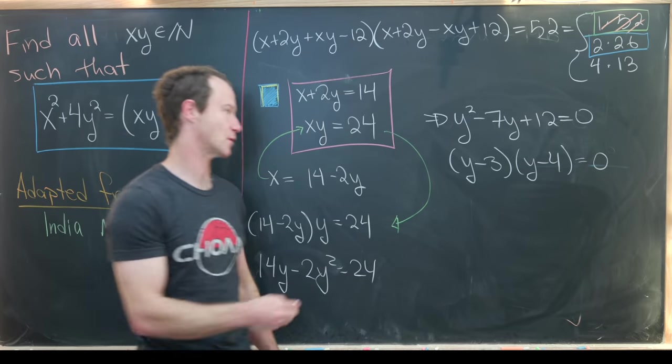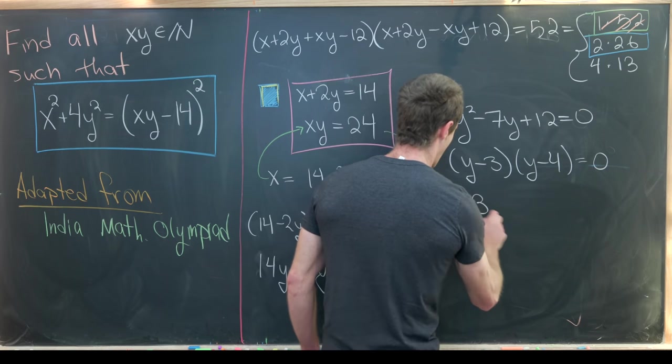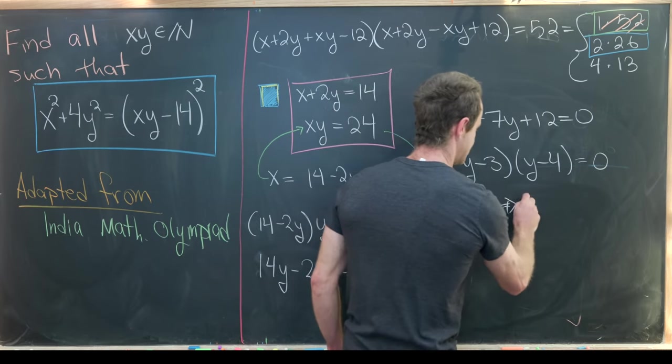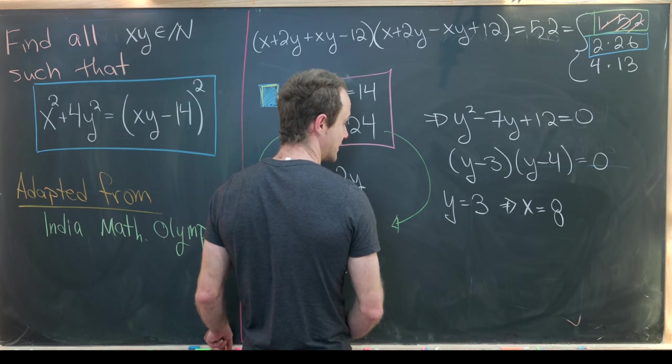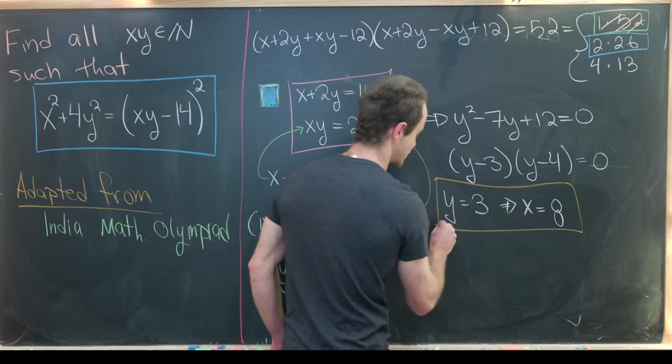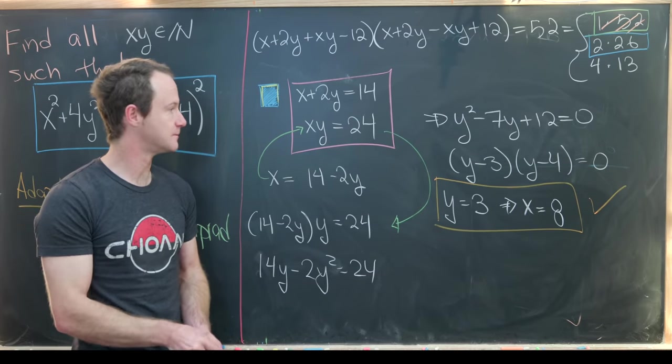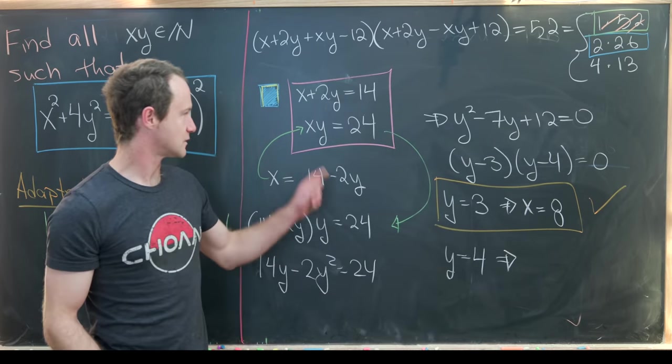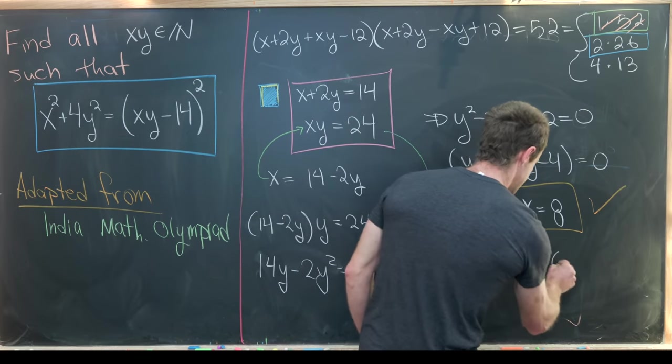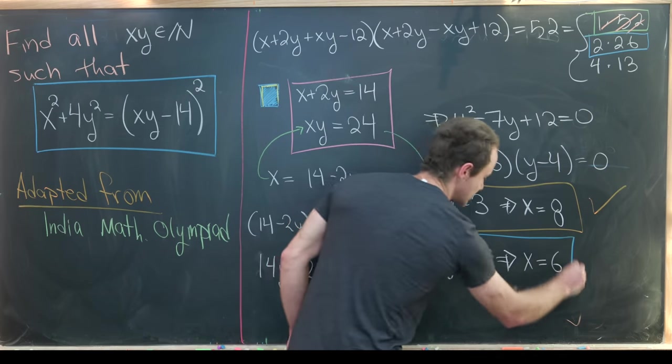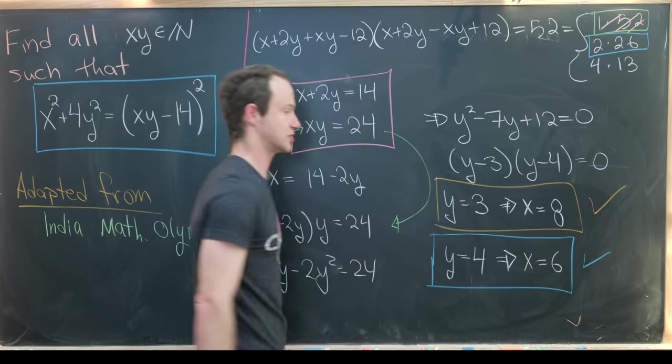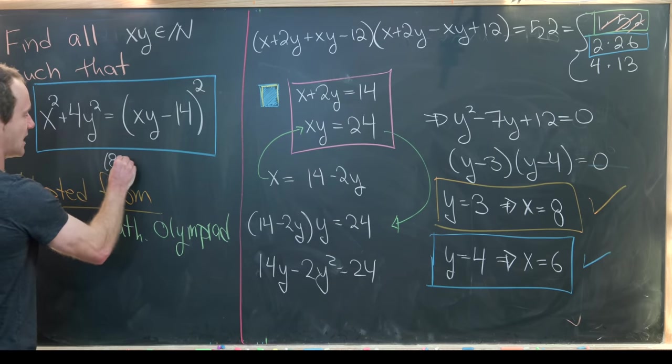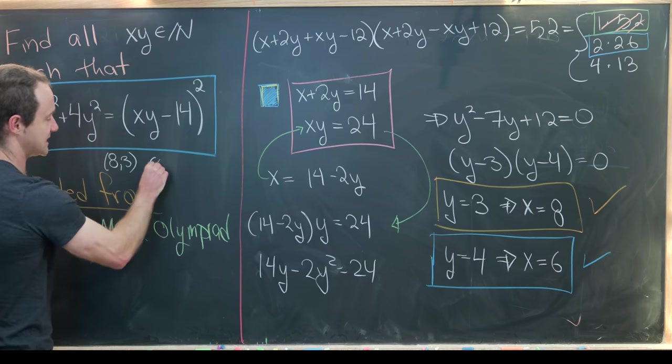That gives us two possibilities for y. We've got this possibility when y is equal to 3. Notice if y is equal to 3 that means x is equal to 8. I'll let you guys plug that into the original equation to see that this actually works. So this gives us a solution to our equation. Furthermore we see that another possibility is y equals 4. If we get y equals 4 then x is equal to 6. And again I'll let you guys plug that into the original equation to see that that is also a solution. So we've got two solutions so far. Maybe I'll write them as ordered pairs over here. We have 8 comma 3 and then we also have 6 comma 4.